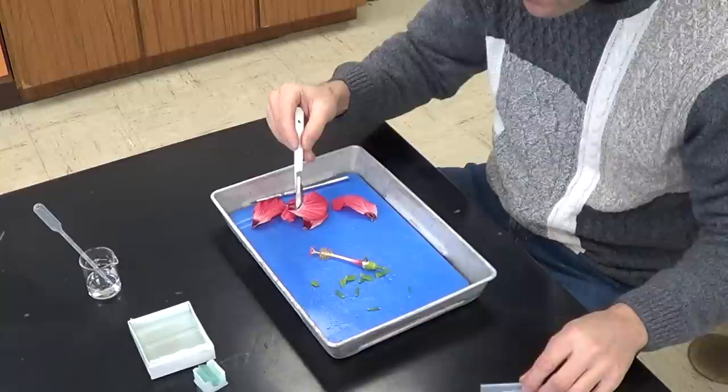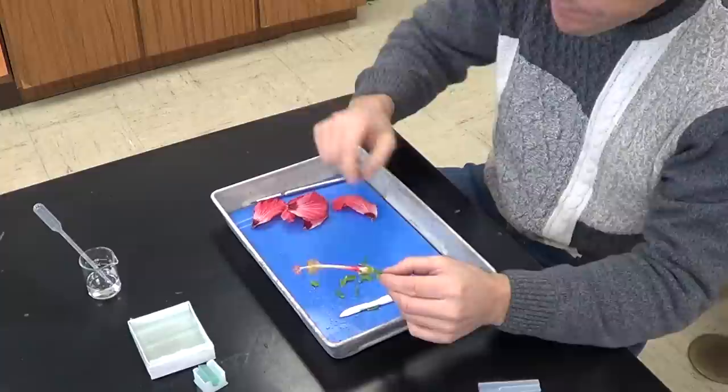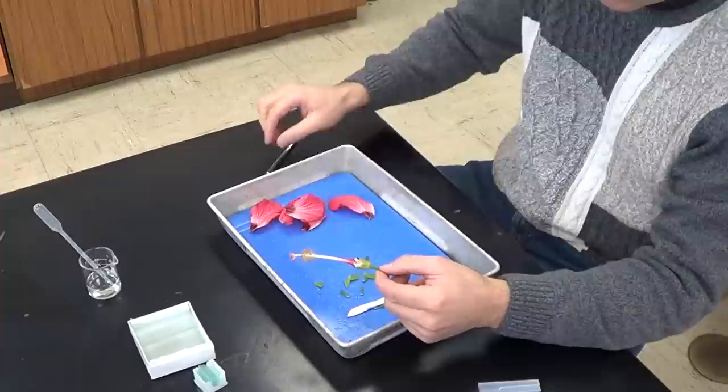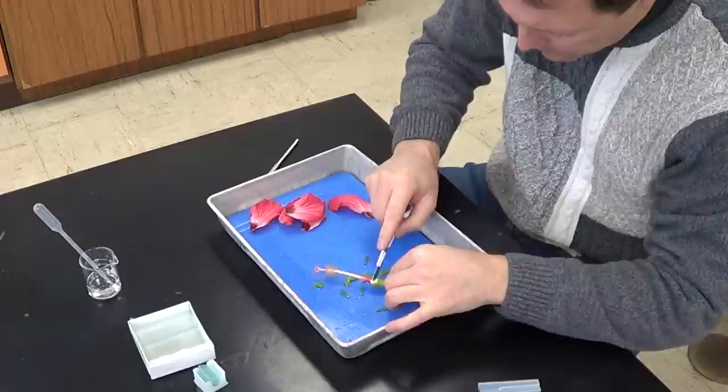Now I'm going to remove the scalpel cover very carefully, and I'm going to end up cutting the ovary. The ovary is this dilated area right here. I like to actually cut it right in half, right around here. Now I'm going to cut that ovary in half.